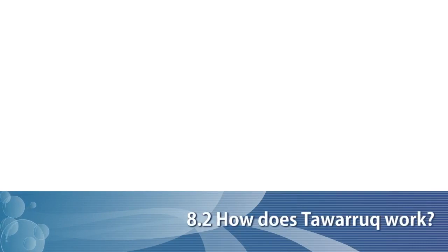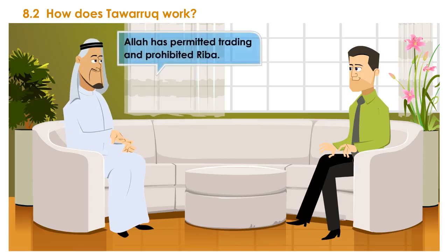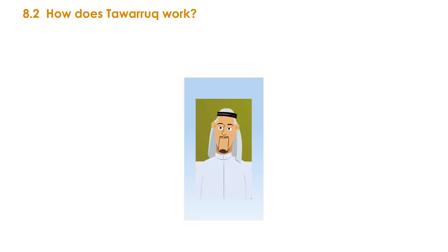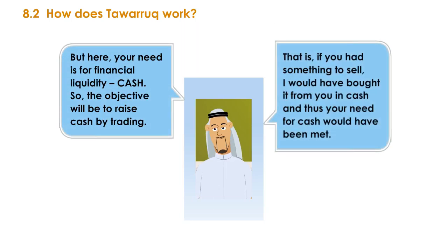How does Tawaruk work? Allah has permitted trading and prohibited riba. Thus, if you want an asset like a car or a television, I can sell them to you on credit. But here, your need is for financial liquidity — cash. So the objective will be to raise cash by trading. That is, if you had something to sell, I would have bought it from you in cash, and thus your need for cash would have been met.